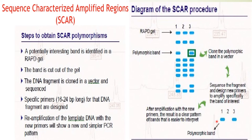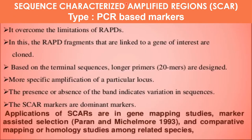The sequence characterized amplified region falls under the type of PCR-based markers. It overcomes the limitations of RAPD. The RAPD fragments that are linked to the gene of interest are cloned, and based on the terminal sequence, longer primers of 20-mers are designed, allowing more specific amplification of a particular locus.